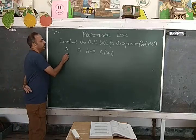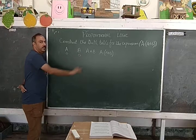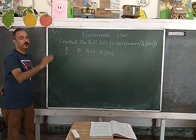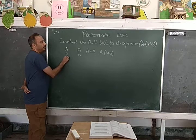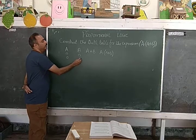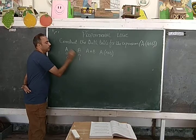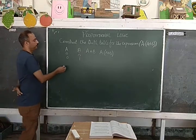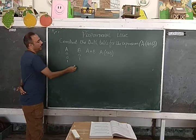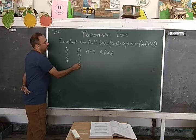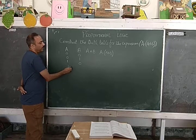The first condition: both statements are false — statement A is false, statement B is false. Second condition: first statement is false and second statement is true. Third condition: first statement is true and second statement is false. And the fourth condition: both are true.